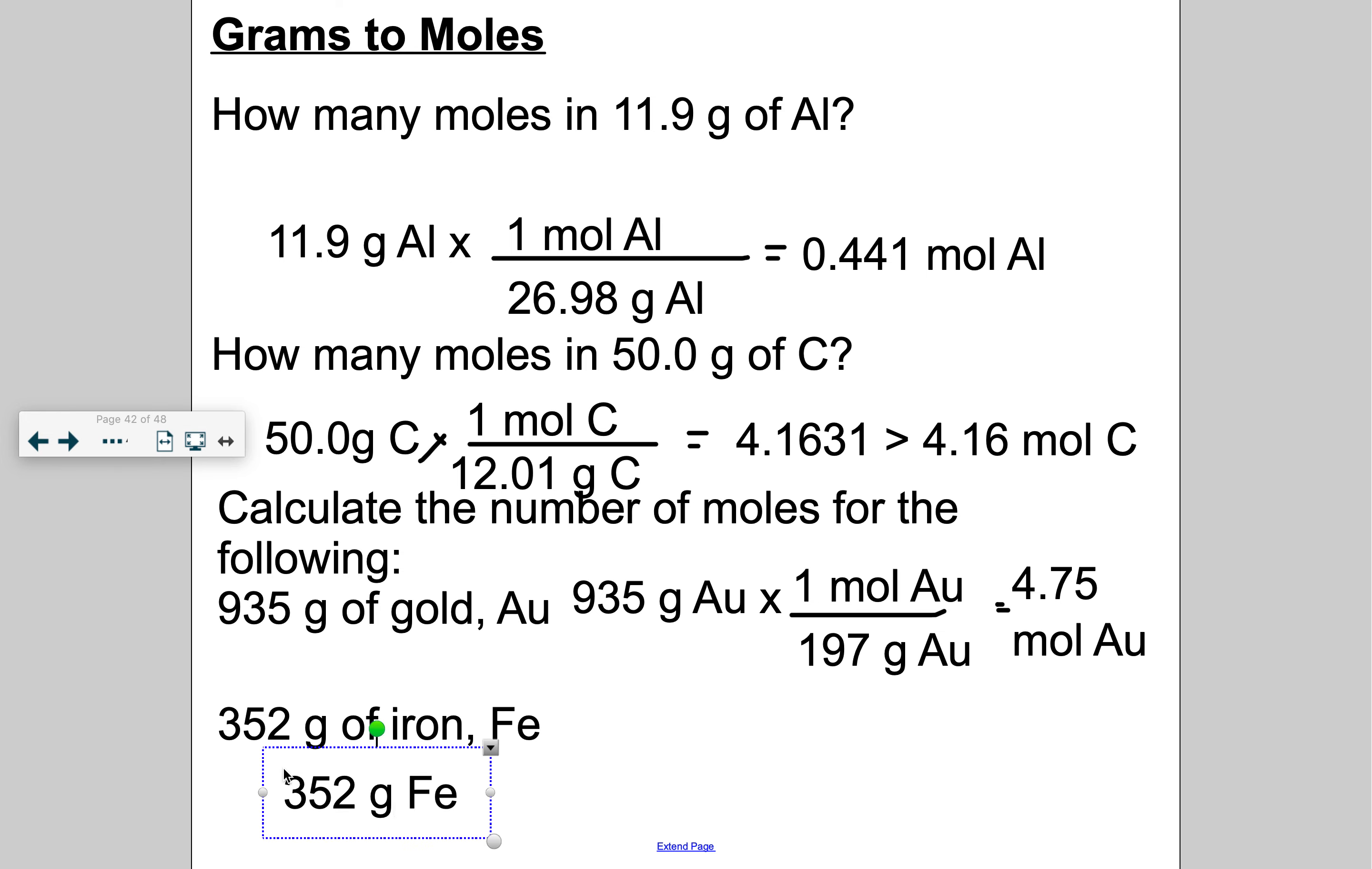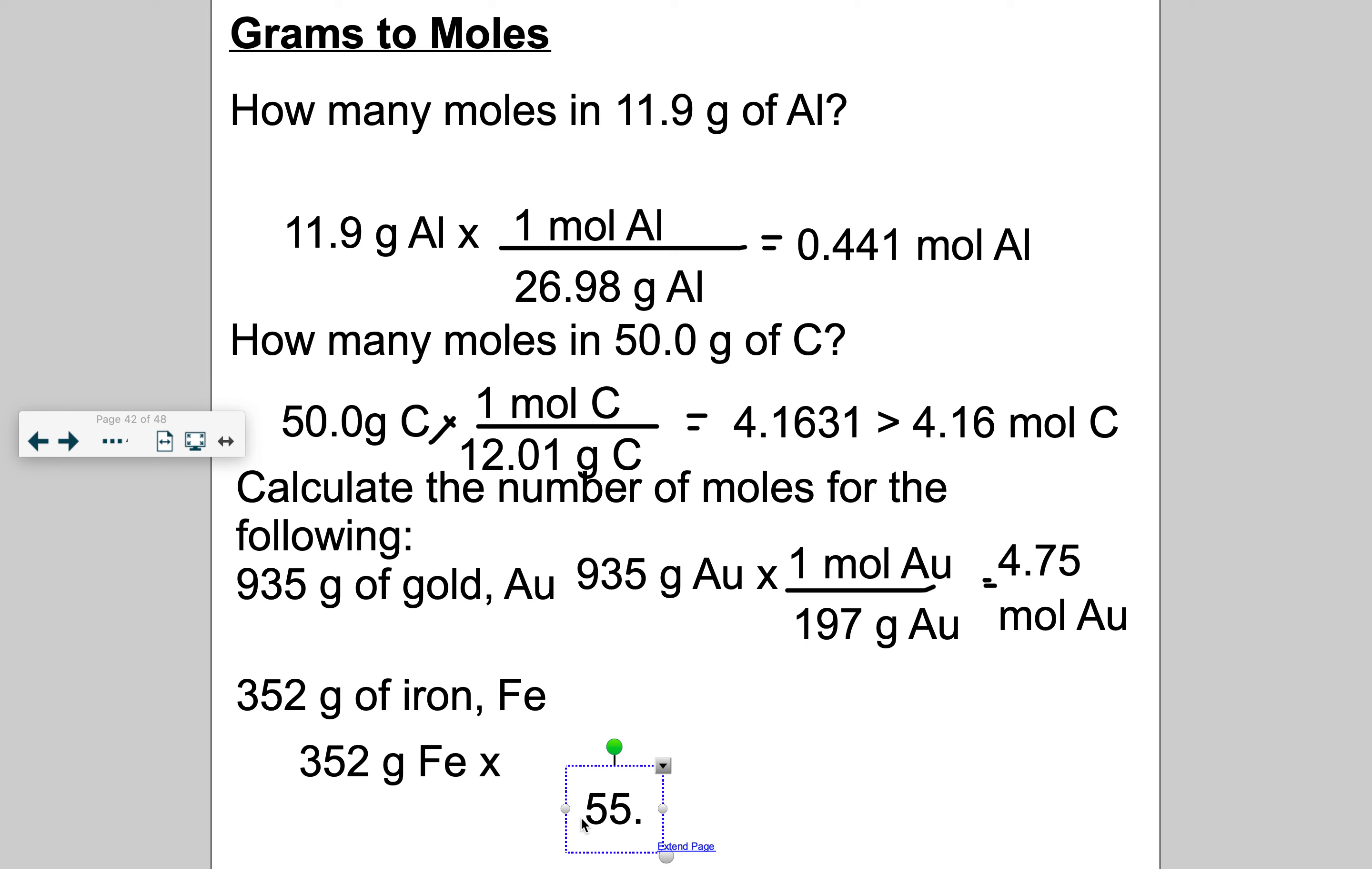352 grams of iron. Set up the conversion. Molar mass of iron is 55.85. And that is equivalent to one mole of iron. Let me do the math. 352 divided by 55.85, 6.302. So I'm going to stop right after the 0, three sig figs. And the answer is 6.30 moles of iron.